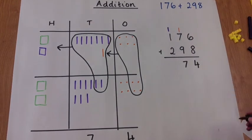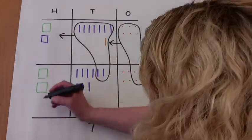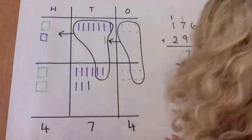And now we turn our attention to the hundreds column, where we have 4 hundreds.